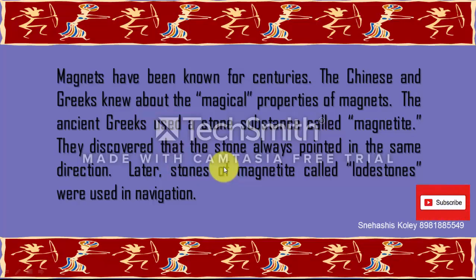A naturally occurring black colored substance called lodestone can attract a piece of iron kept nearby. In early days, the Greeks observed this property of lodestone, an oxide of iron called magnetite. This property of a naturally occurring substance is called natural magnet. Magnets are also made artificially in various shapes or sizes depending on their use. The branch of physics which deals with the study of magnets, their properties and applications is called magnetism.